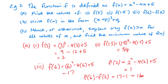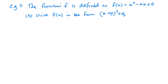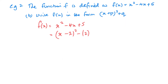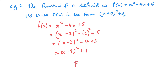Let's look at part b — I'll take a fresh page. Now I need to write it in the form x plus p, all squared, plus q. So this is completing the square. Starting with x squared minus 4x plus 5: that gives x minus 2, all squared, minus 2 squared plus 5. So we get x minus 2 squared minus 4 plus 5, which is x minus 2 squared plus 1. So p is negative 2 and q is positive 1.